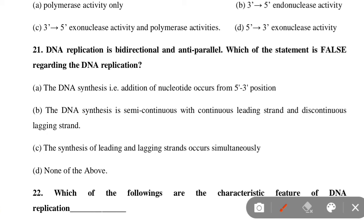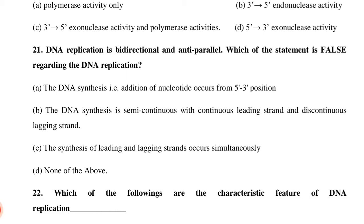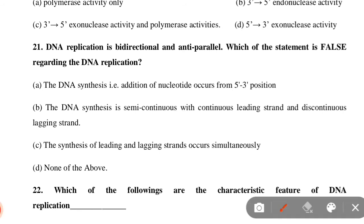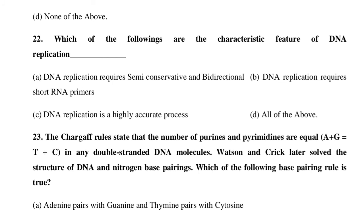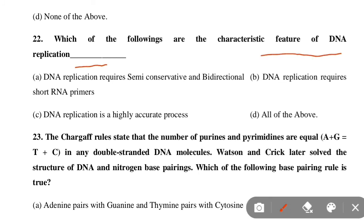Next MCQ: DNA replication is bi-directional and anti-parallel. Which of the following statements is false regarding DNA replication? Option A: DNA synthesis/addition of nucleotides occurs from 5' to 3'. Option B: DNA synthesis is semi-continuous with continuous leading strand and discontinuous lagging strand. Option C: Synthesis of leading and lagging strands occurs simultaneously. Option D: None of the above. Option D is correct — none of the above is false.